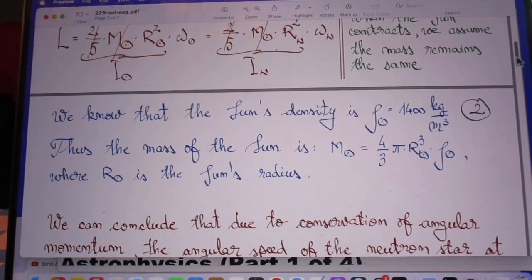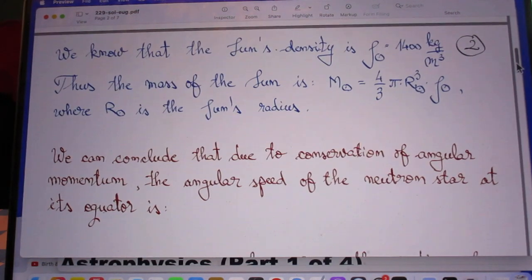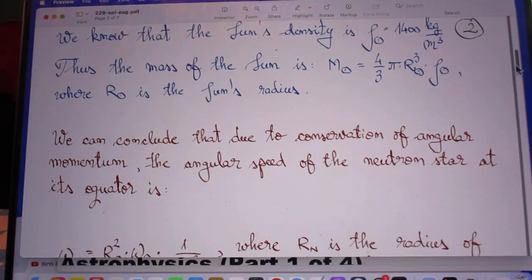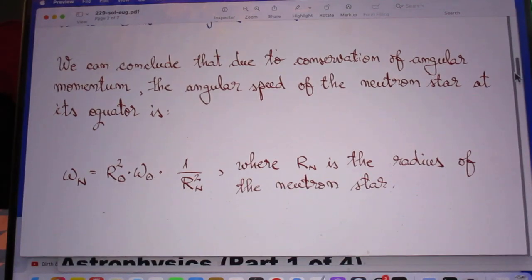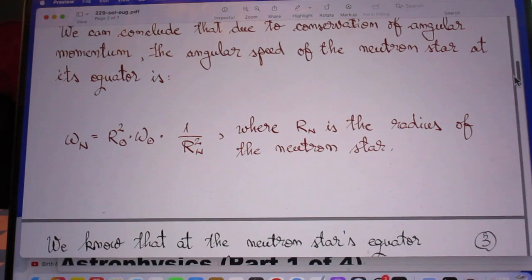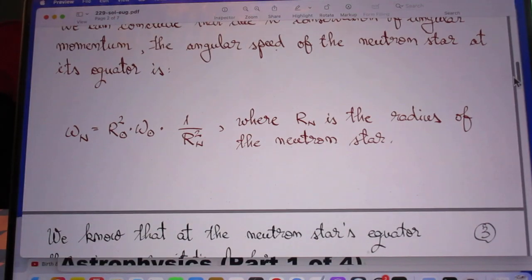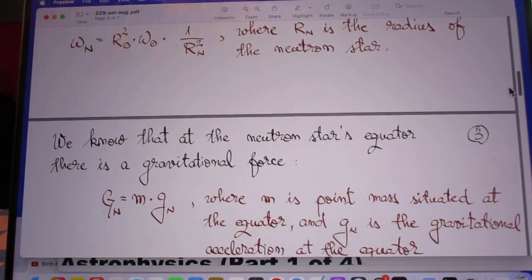So he calculates then the angular momentum. He uses the density of the sun and he uses the radius of the sun. And we then conclude that due to the conservation of angular momentum, the angular speed of the neutron star at its equator is given here.